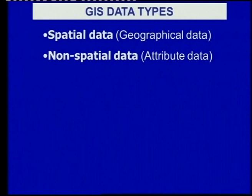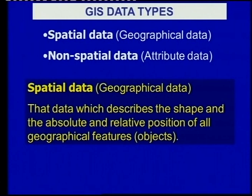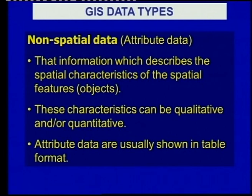We can distinguish between two different types of GIS data. First is our spatial data, also better known as geographical data — all the data we see on our maps. Our non-spatial data is the attribute data, which is data describing the feature itself. Spatial data describes the shape and the absolute and relative position of all geographical features or objects. The non-spatial attribute data describes the spatial characteristics of the feature — characteristics that can be qualitative or quantitative, meaning descriptive or numerical.